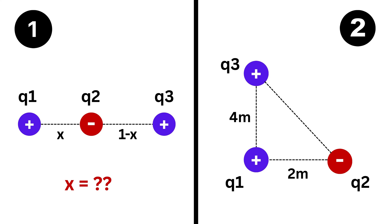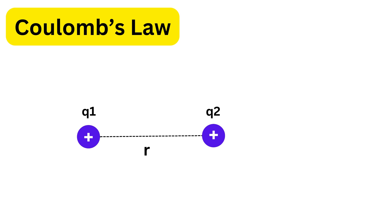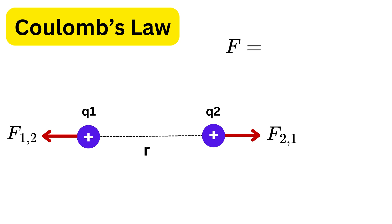Today we will be solving two Coulomb's Law problems, but before that let us understand Coulomb's Law properly. In electrostatics, the force between two charges follows the same idea as the gravitational force. If charge q1 is at one position and charge q2 is at another, then the force on q2 due to q1 is written as F(2,1), and the force on q1 due to q2 is written as F(1,2).